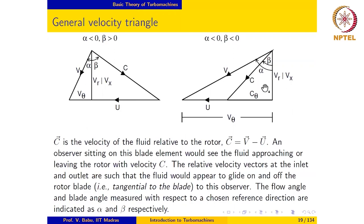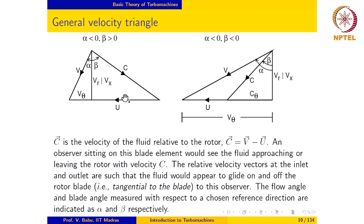The difference between the two velocity triangles lies in the nature of the angles alpha and beta. The angle alpha is called the flow angle — that is the angle that the absolute velocity vector makes with the reference direction. The angle beta is the blade angle, or the angle that the relative velocity vector makes with the reference direction. The reference direction is the axial direction for an axial machine and the radial direction for a radial machine, and it is perpendicular to the blade velocity vector in both cases.